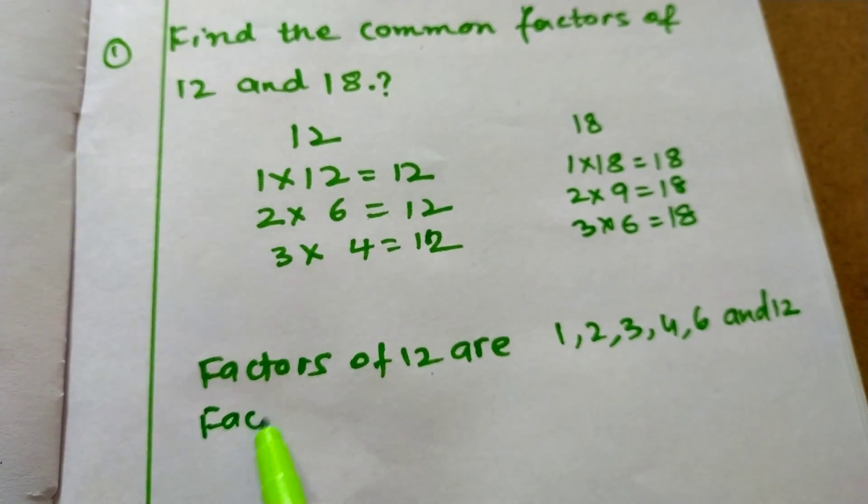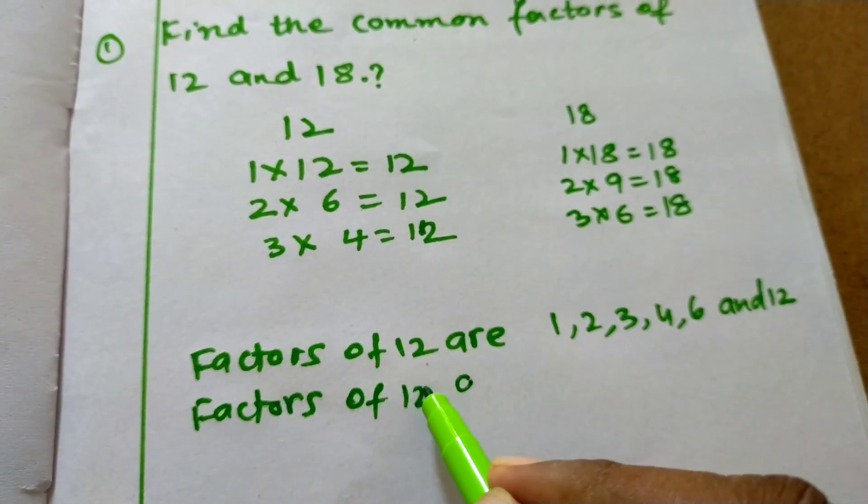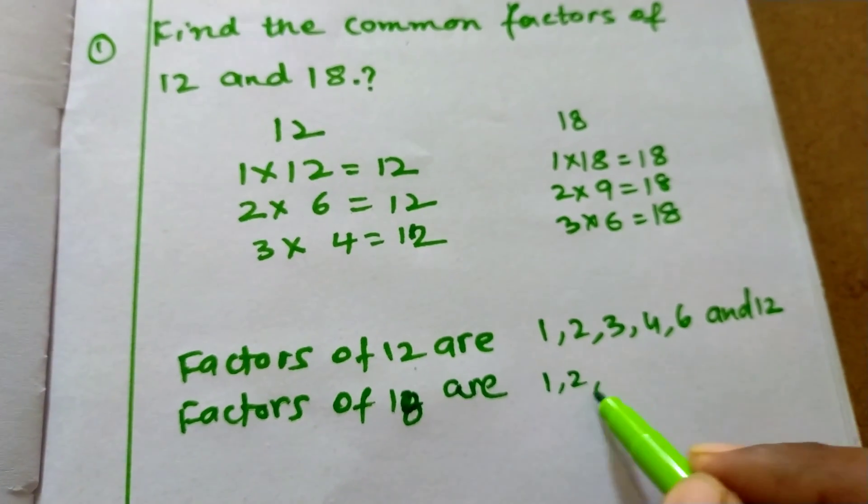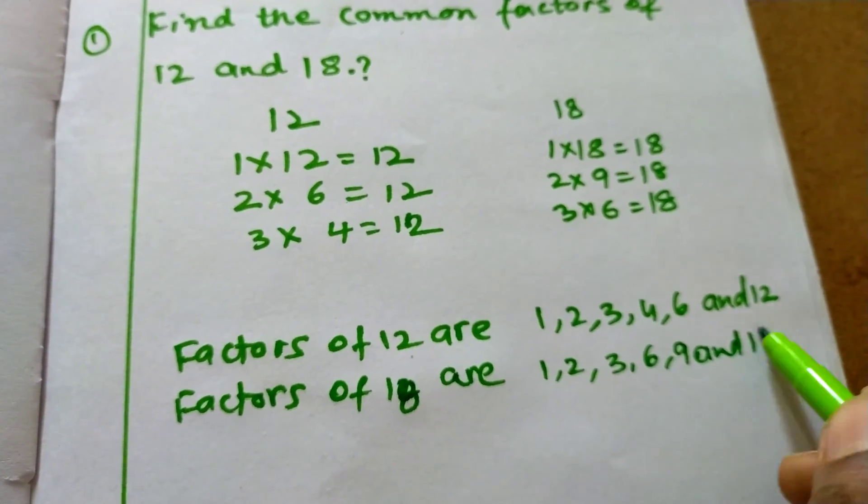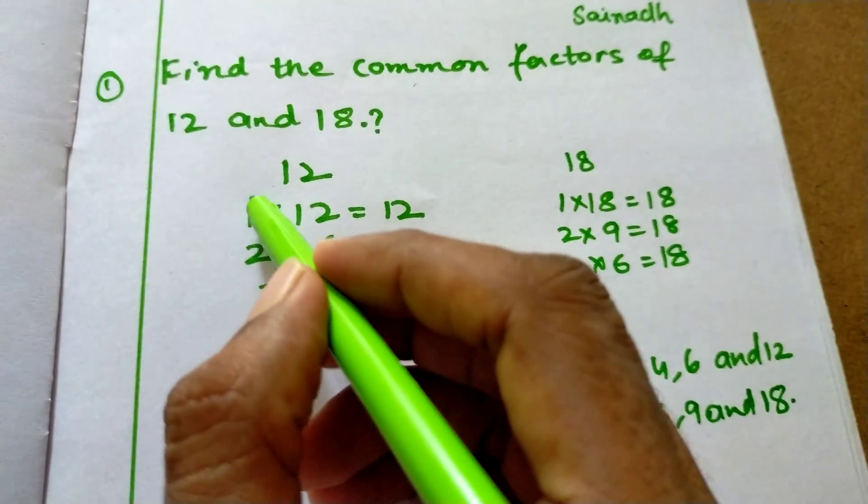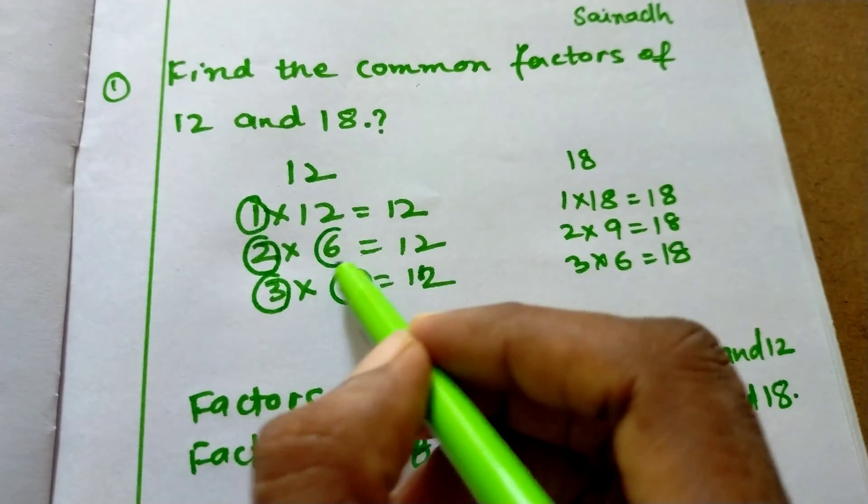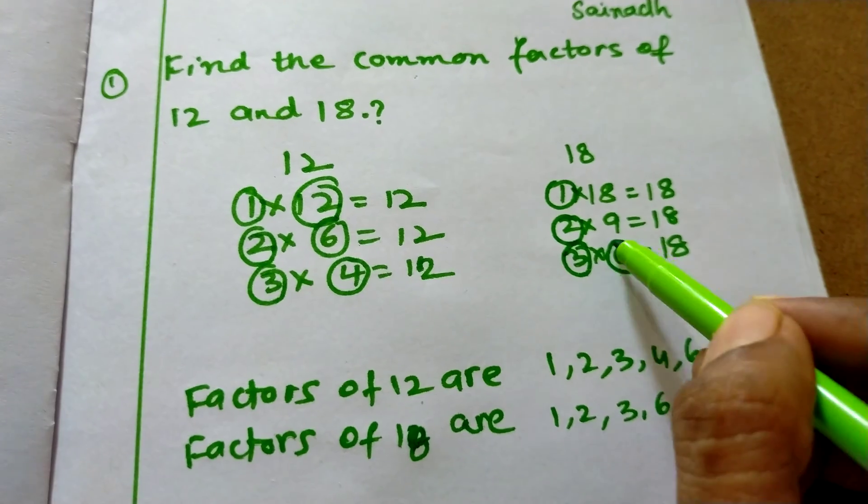Now I will write the factors of 18: 1, 2, 3, 6, 9, and 18. These are the factors of 12, and these are the factors of 18.